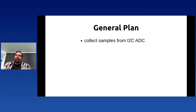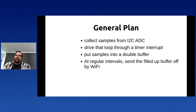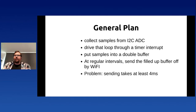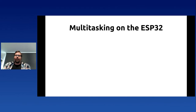The general plan is: collect samples from the I2C ADC, driven through a timer interrupt, put samples into a buffer, then at regular intervals send the filled buffer over Wi-Fi using TCP. I could also use UDP — which has advantages and disadvantages. The biggest problem is that sending takes at least four milliseconds, and if you do it naively you get a gap of four milliseconds in your one-millisecond-spaced samples.